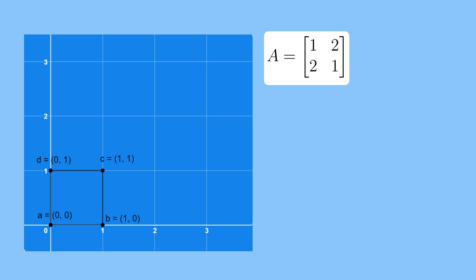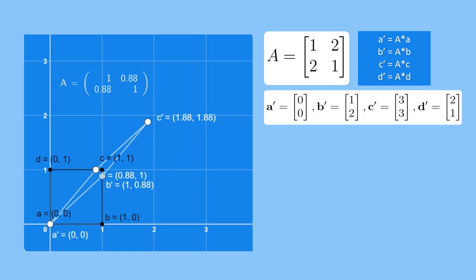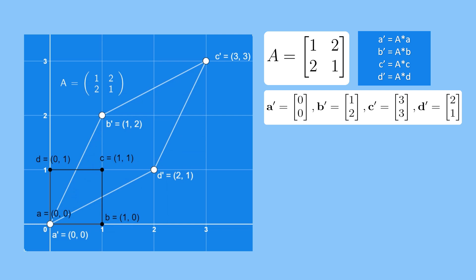Now consider a matrix labeled A with entries 1, 2, 2, and 1. When this matrix is applied to transform the square, the resulting vertices become a' at (0,0), b' at (1,2), c' at (3,3), and d' at (2,1). The transformed geometry is now a parallelogram with an area of 3, which is three times the area of the original square.